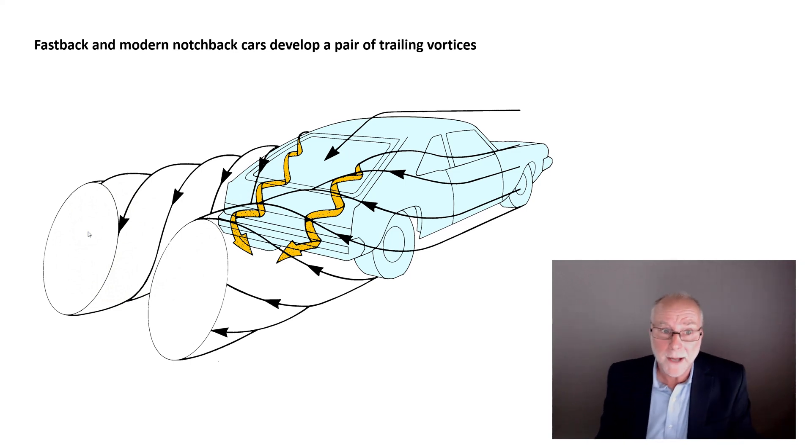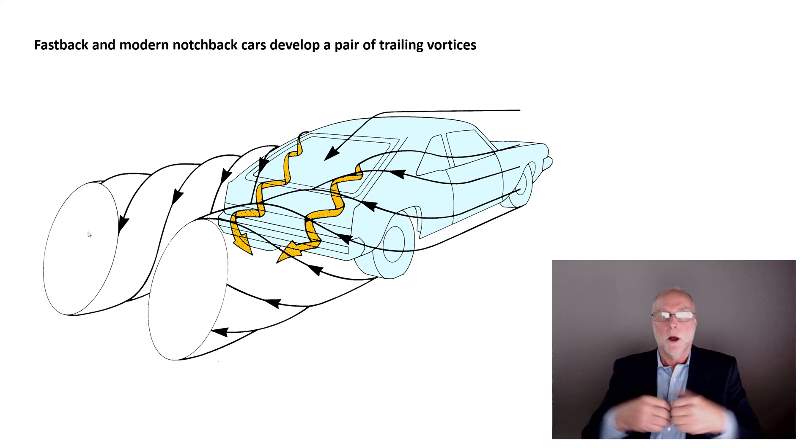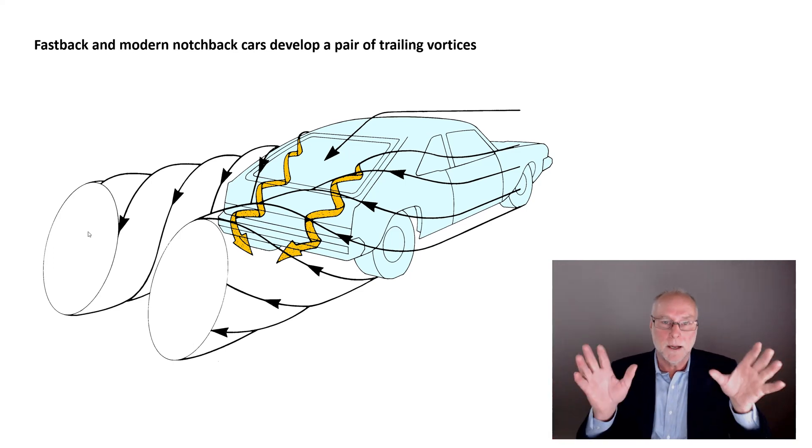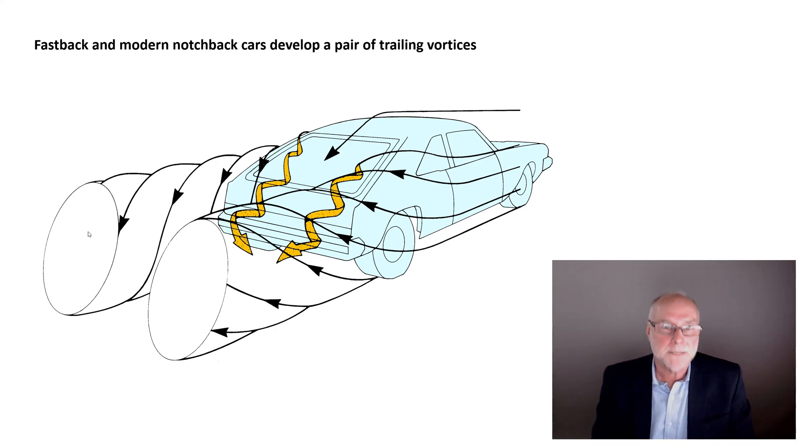A reminder, I said fastback and modern notchback cars only. Squarebacks with a vertical rear do not have this type of airflow behind them. Open-wheeled race cars have all sorts of other things happening. We're talking only about fastback and modern notchback cars. I wouldn't want you to try and apply these techniques to shapes that don't have these sort of trailing vortices, because that won't work.